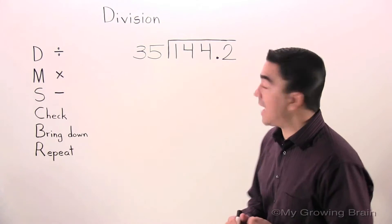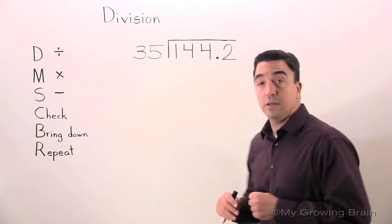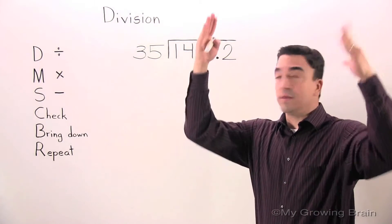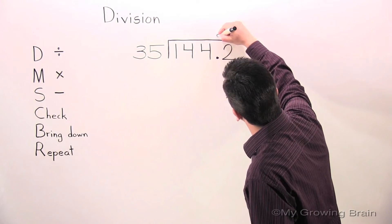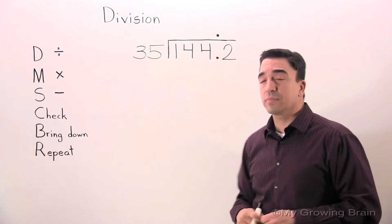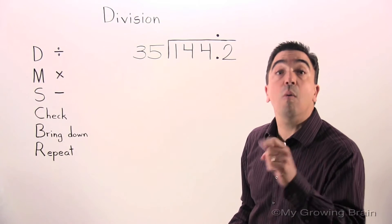First thing I want to point out is our decimal in the dividend. We must raise it into the quotient. Watch. Next, we have to organize our problem.